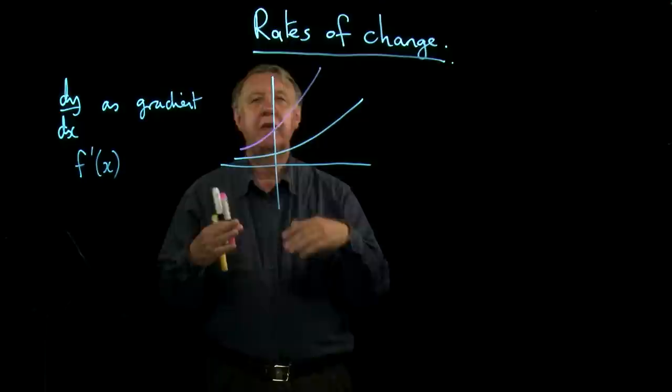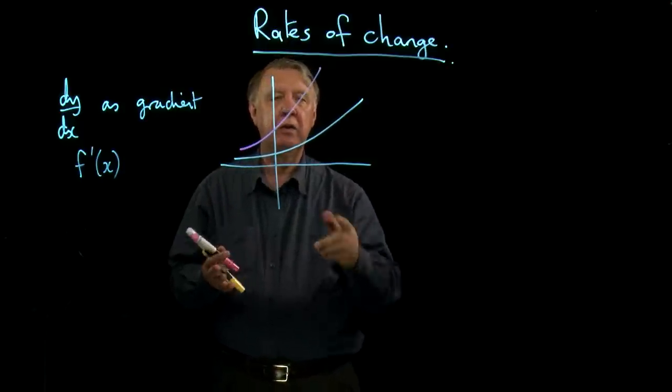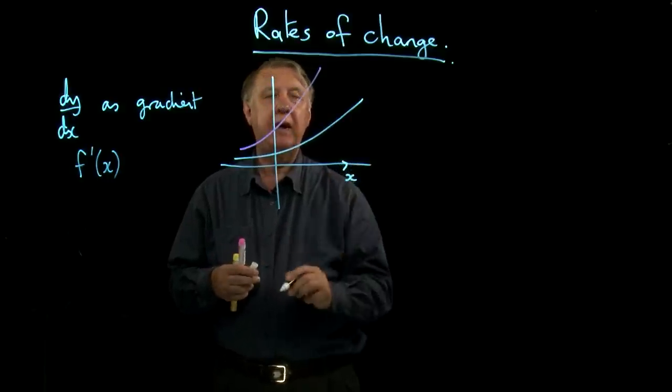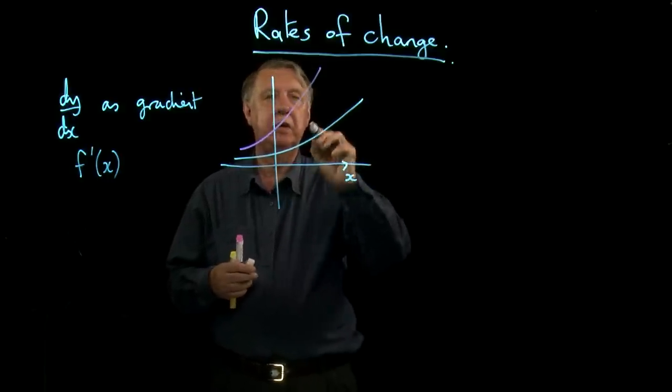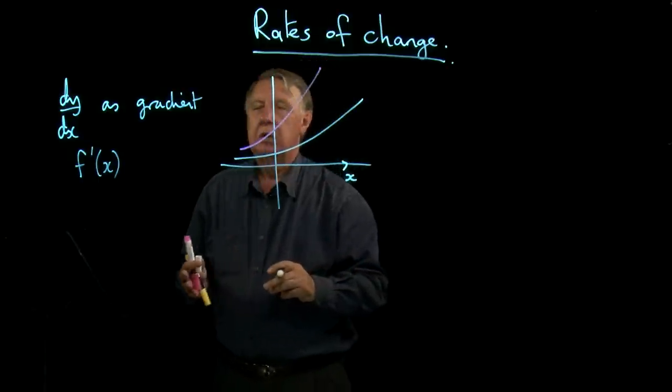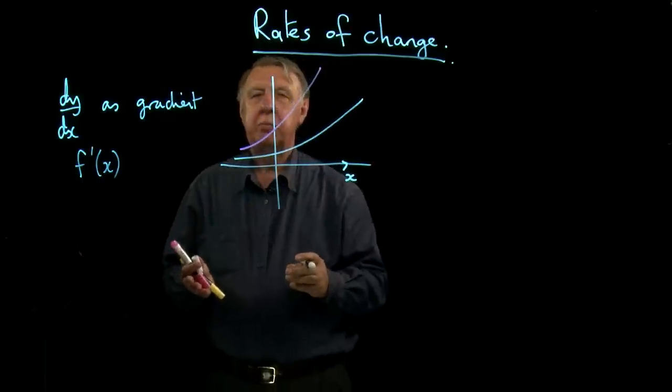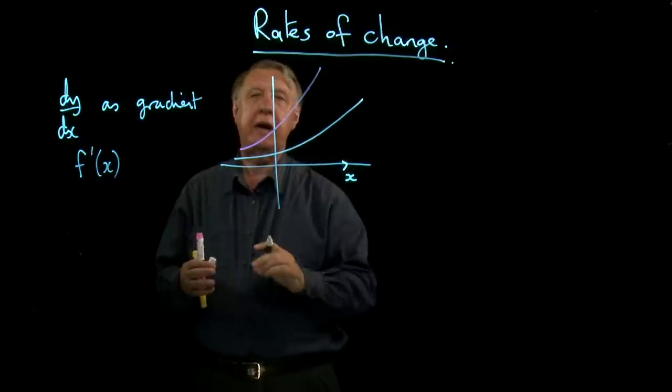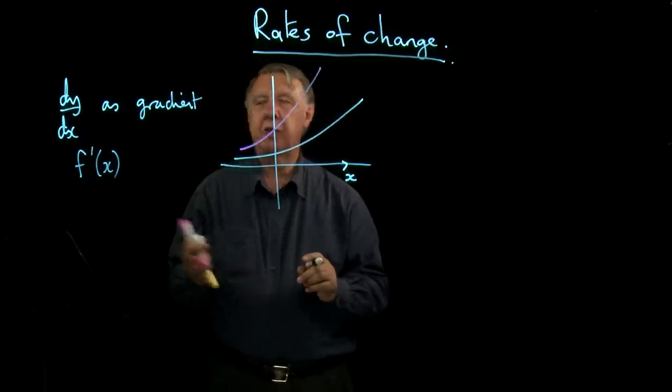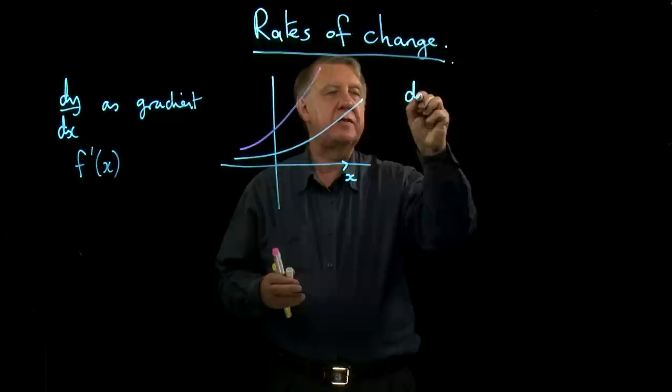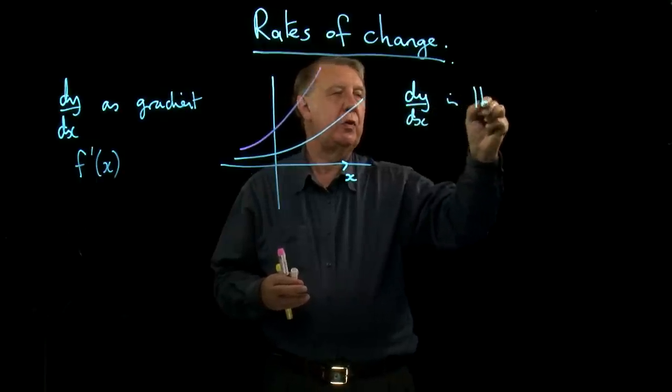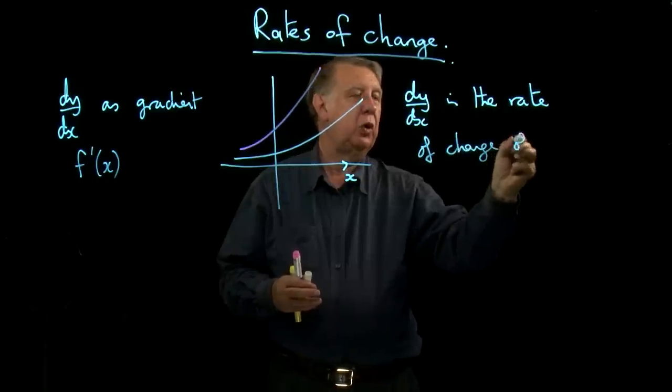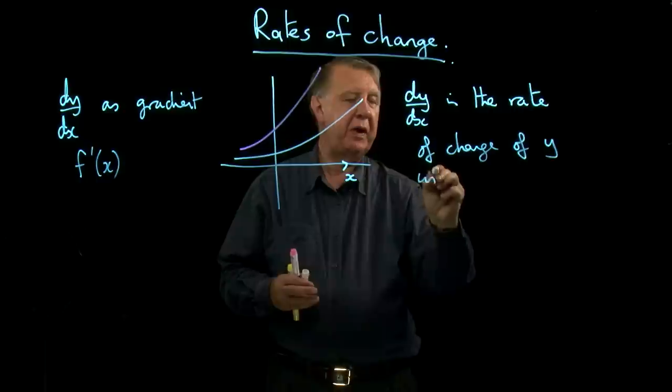In other words, the rate at which they are climbing with respect to the distance travelled along here is different for these two different curves. So we could argue then that gradient measures the rate of change of y as x changes. And we often say that dy dx is the rate of change of y with respect to x.